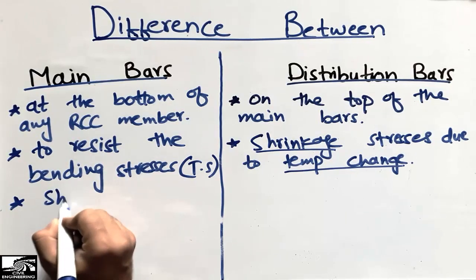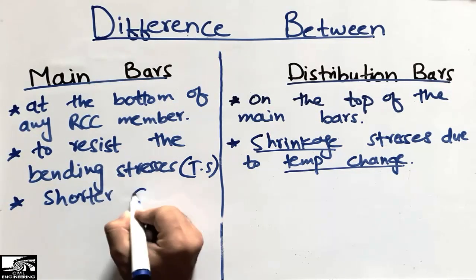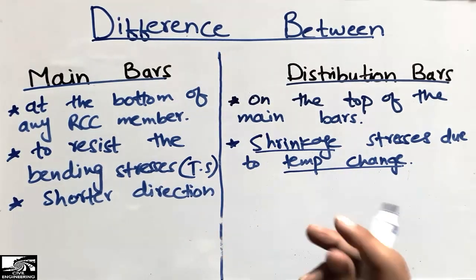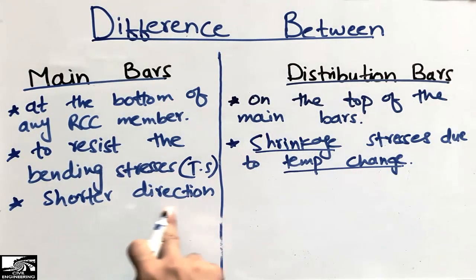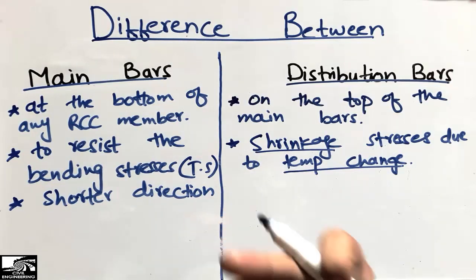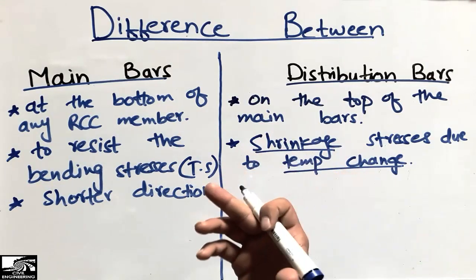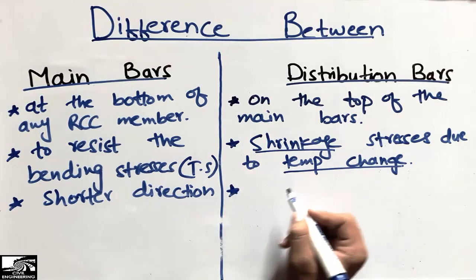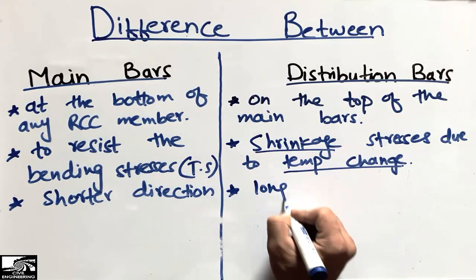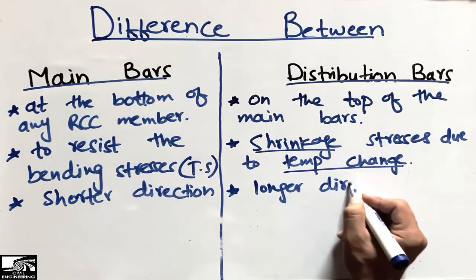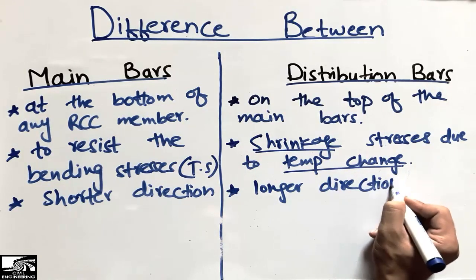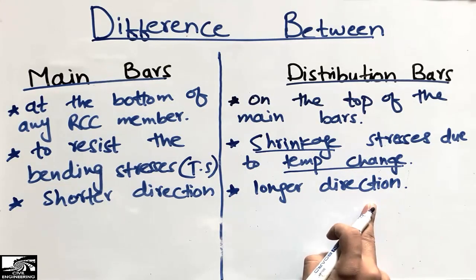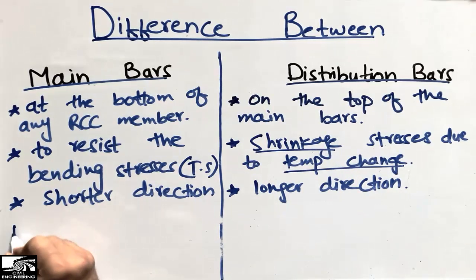Coming to the third difference: main bars are usually provided in the shorter direction. Why? Because the bending moment is maximum in the shorter direction. If we choose any rectangular footing or slab, main bars are provided in the shorter direction, while distribution bars are provided along the longer direction, because in the longer direction there are not too many stresses.